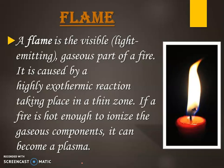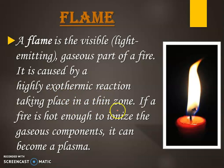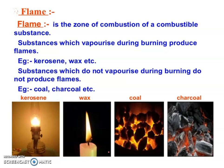Now, flame. A flame is a visible gaseous part of fire. A highly exothermic reaction takes place in this thin zone — exothermic means that heat is produced. Flame is the zone of combustion. Substances which vaporize during the burning process produce a flame, like kerosene and wax.